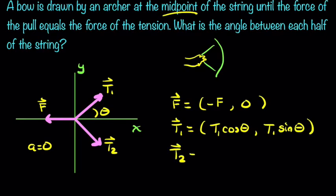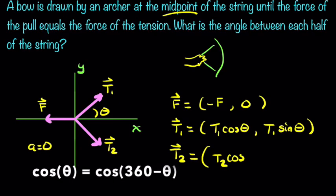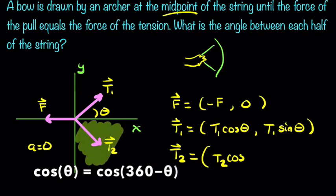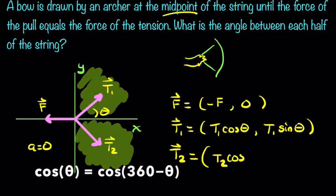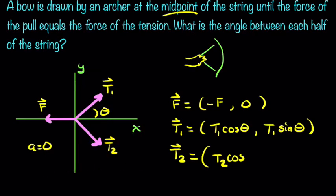How about T2? Now T2, we're actually looking at this angle here all the way around, which is 360 degrees minus theta. So in this case, it would be the magnitude of T2 multiplied by cosine of 360 minus theta. But in this case, cosine is the same in the fourth quadrant as it is in the first quadrant. Both will be a positive value. So we could just call this theta.